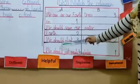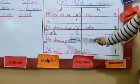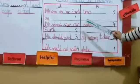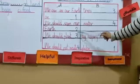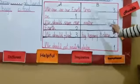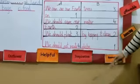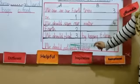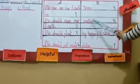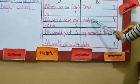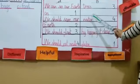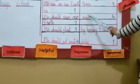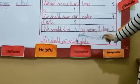Number 3: we should plant trees — write three in front of both, or you can match it. Number 4: we should not waste water — write four in front of both, or match it. It's your choice.